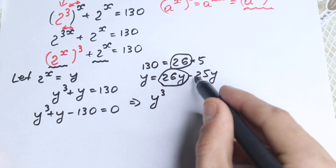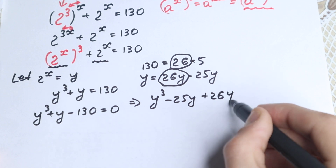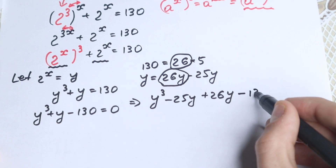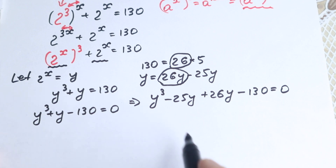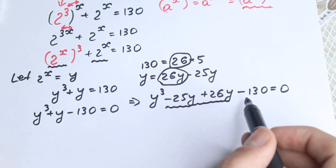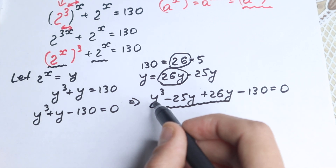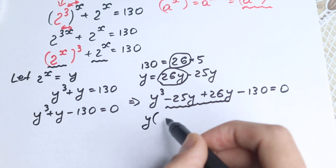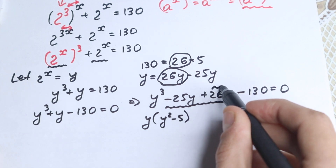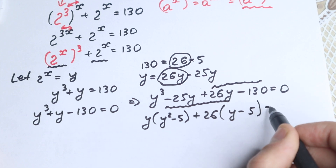So let's change y by this expression. We have: y cubed, then instead of y I write minus 25y, and reordering gives us plus 26y, minus 130, equals 0. I just replace y with minus 25y plus 26y. Now let's try to factor by grouping these elements. From the first group, factor out y: y times (y squared minus 25). From the second group, factor out 26: plus 26 times (y minus 5), equals 0.